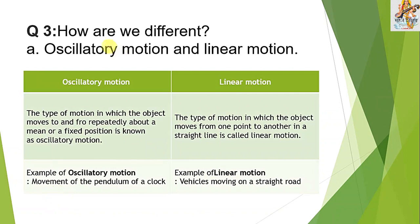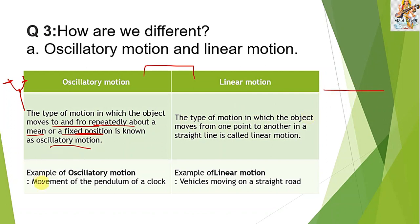Question 3: How are we different? Oscillatory motion vs. linear motion. Oscillatory motion is the type of motion in which the object moves to and fro repeatedly about a mean or fixed position — for example, a tuning fork. Linear motion is the type of motion in which the object moves from one point to another in a straight line. Example of oscillatory motion: movement of a pendulum in a clock. Example of linear motion: vehicles moving on a straight highway.